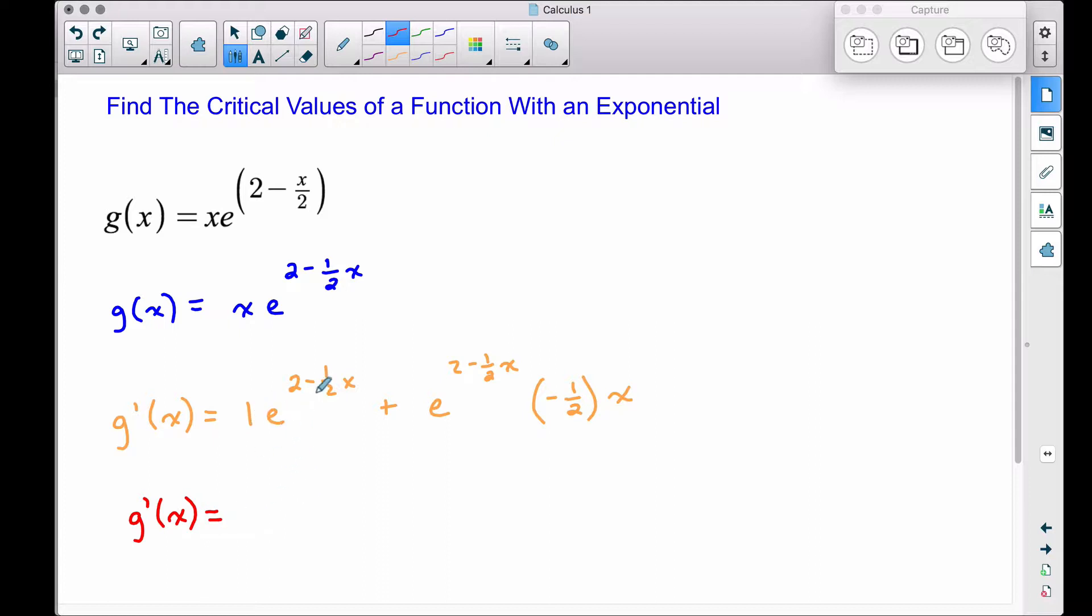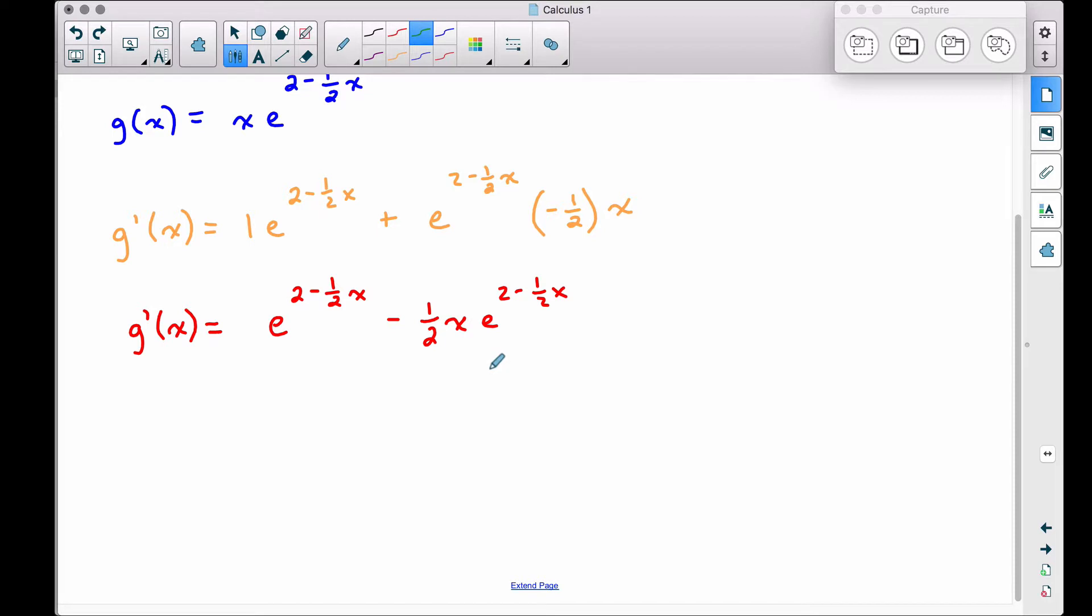So after applying the product rule, let's clean this up. One times this stuff is going to be that stuff. And then cleaning this up here, we have minus one half x e to that stuff. From here, we want to set the derivative equal to zero and we want to solve this equation.